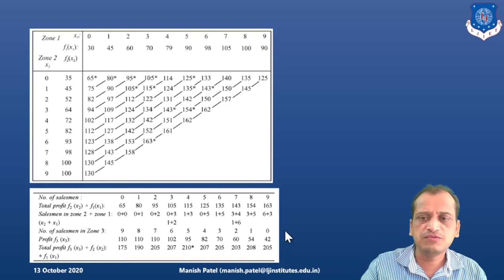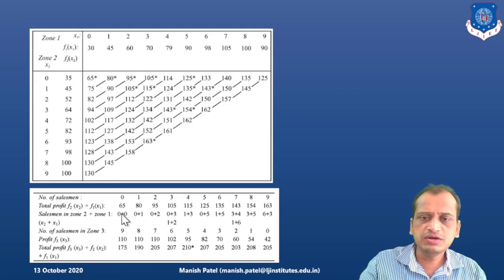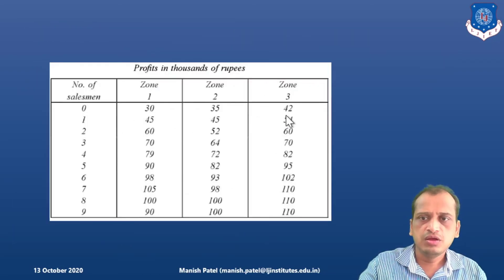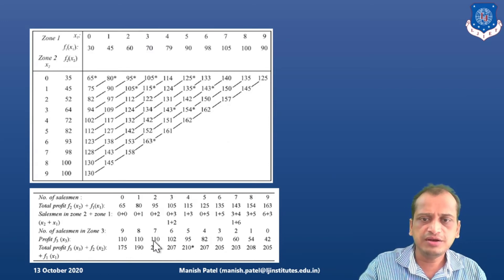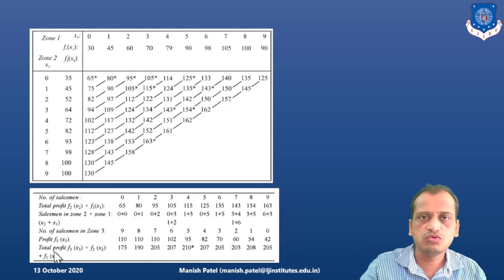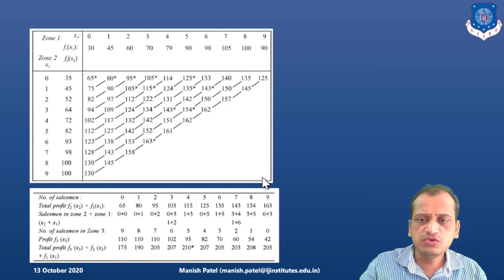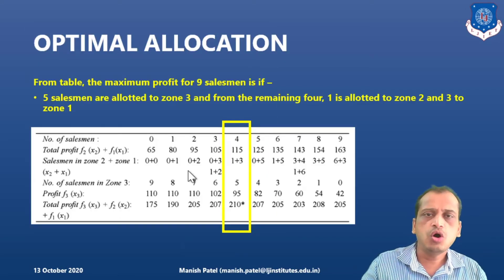Now we look at zone three data, written in reverse because zero plus nine equals nine, one plus eight equals nine — we must allocate nine salesmen across zones. The zone three data in reverse is: 110, 110, 110, 110, 102, 95, 82, 70, 60, 54, 40. We add this to our combined zone one and zone two profits: 65 plus 110 is 175, 80 plus 110 is 190, 95 plus 110 is 205, 105 plus 102 is 207, and so on. The maximum total profit found in this table is 210.